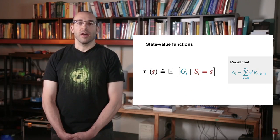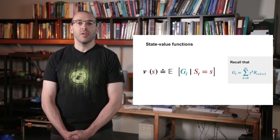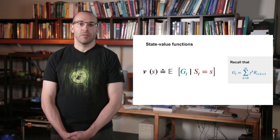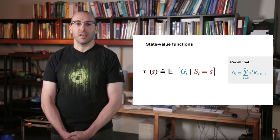Roughly speaking, a state value function is the future reward an agent can expect to receive starting from a particular state. More precisely, the state value function is the expected return from a given state.